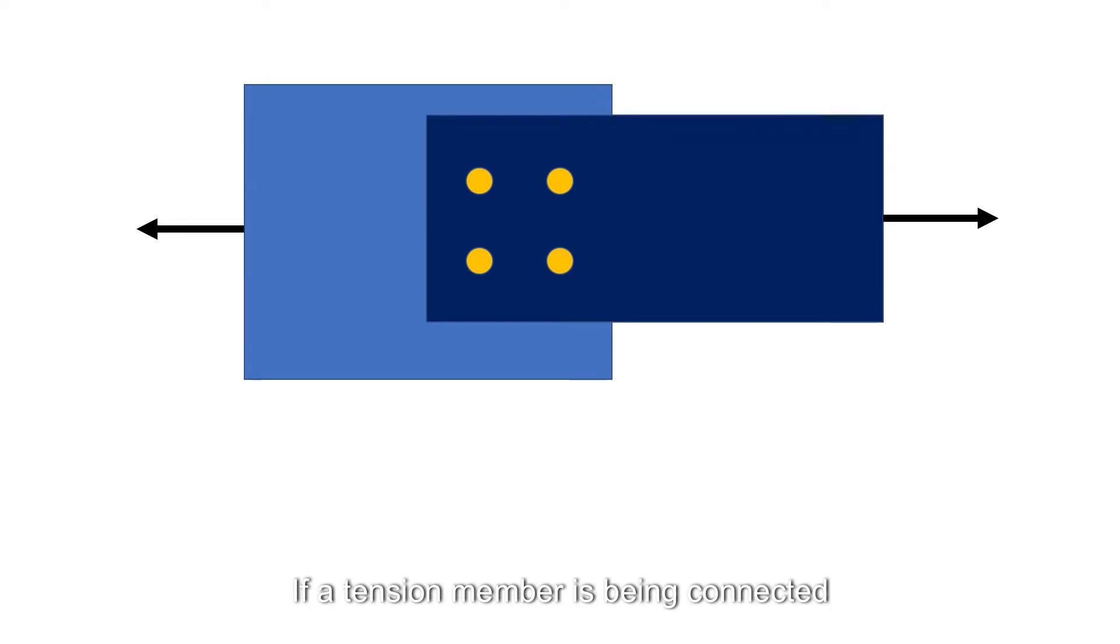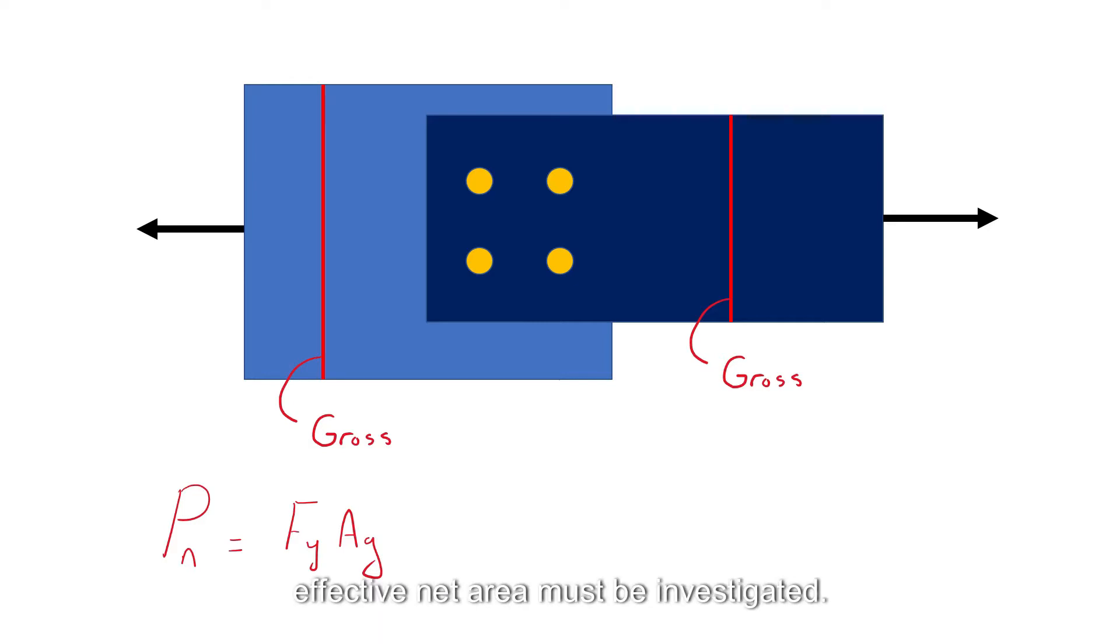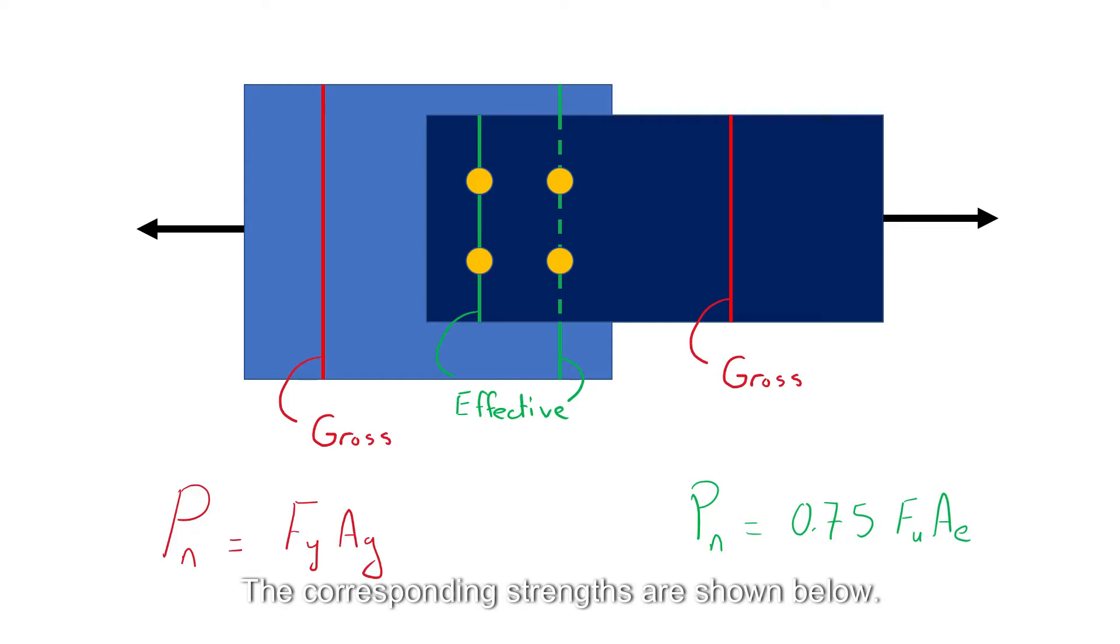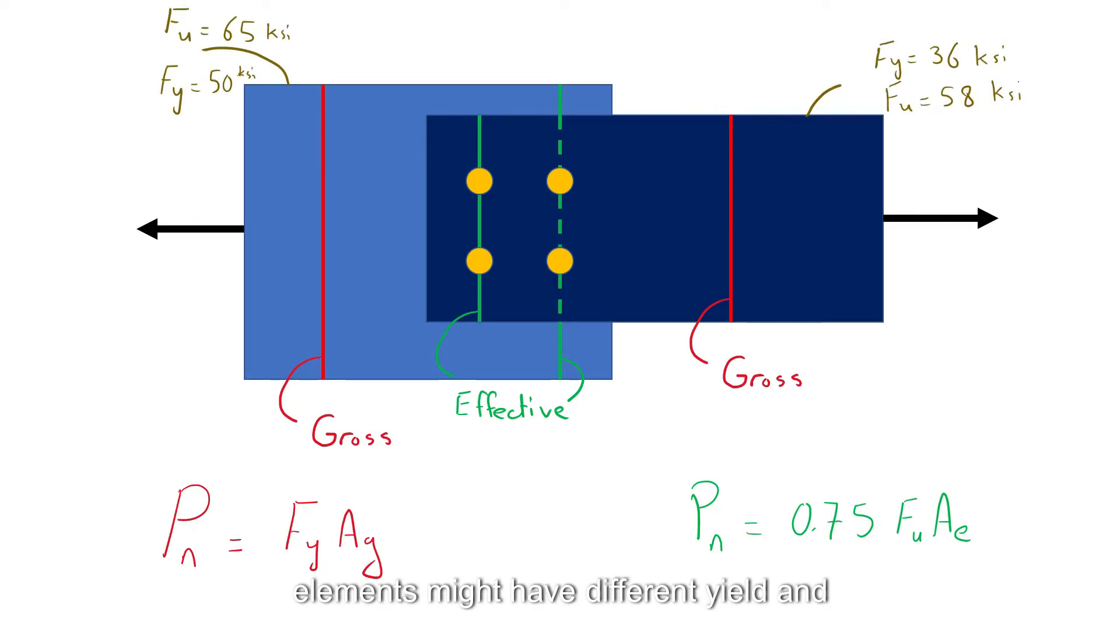If a tension member is being connected, tension in both the gross area and the effective net area must be investigated. The corresponding strengths are shown below. Please be aware that the two connected elements might have different yield and ultimate strengths, and thus each of the equations must be used on both the connecting elements. Here I show an example where one of the elements is made of A992 steel and the other of A36 steel.